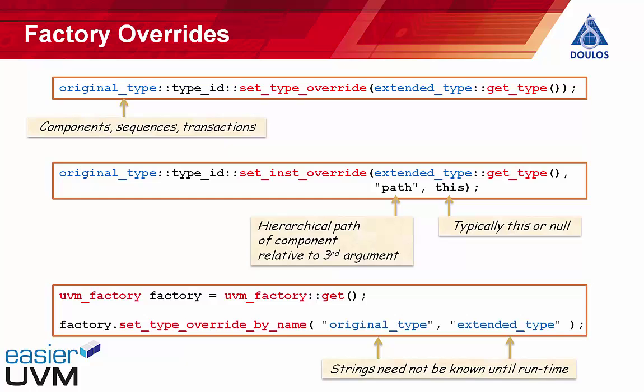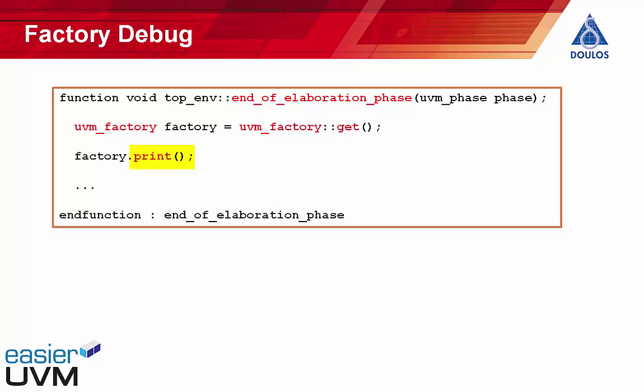Another reason to get a handle to the factory itself is for factory debug. There's a very useful print method of the uvm_factory class that prints out all of the current factory overrides. This code was automatically generated by the Easier UVM code generator — we've got an end_of_elaboration phase method that gets a handle to the factory and then prints out all of the factory overrides that were current at the end of elaboration.